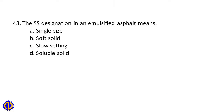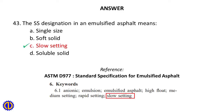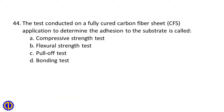Question 43: The SS designation in an emulsified asphalt means A. Single size, B. Soft solid, C. Slow setting, D. Soluble solid. Answer: C. Slow setting. Reference: ASTM D-977, Standard Specification for Emulsified Asphalt. Keyword: Slow setting.